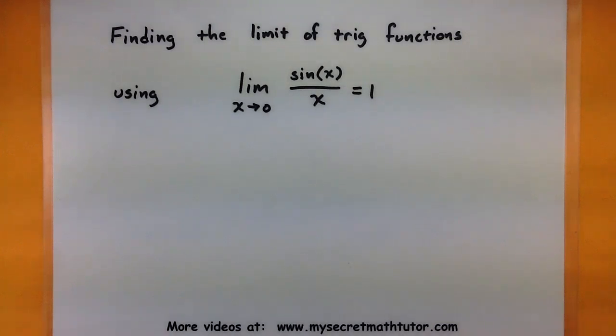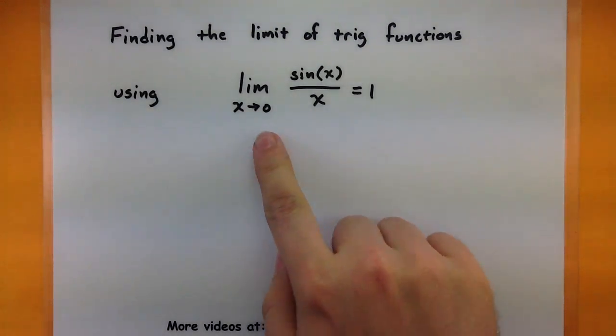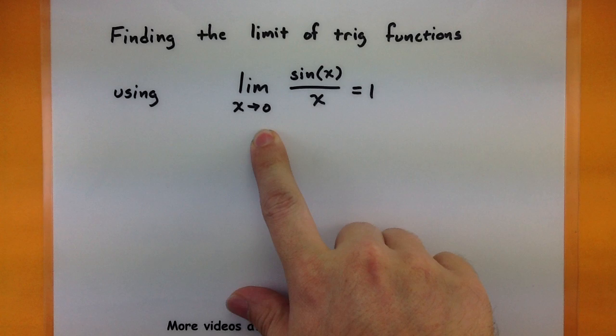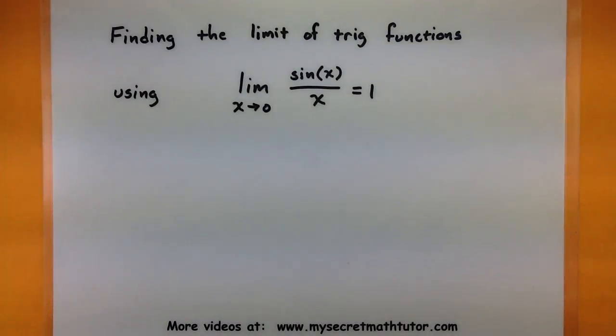Hello and welcome to My Secret Math Tutor. In this video we're going to work on finding the limit of trigonometric functions using this really handy property. This is the fact that the limit as x approaches 0 of sine of x over x is equal to 1.